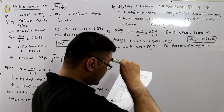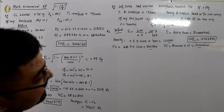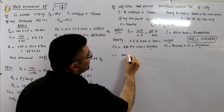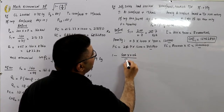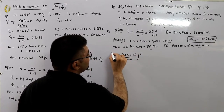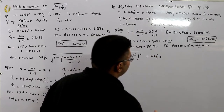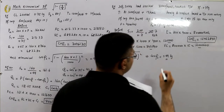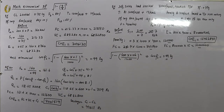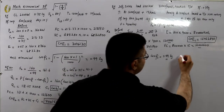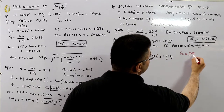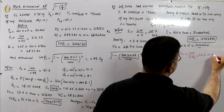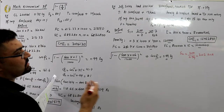Now find the most economical power factor: cos φ₂ = square root of 1 minus (600 × 0.06 / 1,200)², which gives 0.99 lagging. After correction, S₂ = 200 divided by 0.99 = 202 kVA.